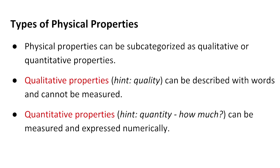Quantitative properties, on the other hand, are something that can actually be measured. We're looking at the quantity of something — physical properties that are measurable, like boiling point and melting point of substances. For example, water freezes at zero degrees Celsius — that is a quantitative physical property of water. Water boils at 100 degrees Celsius — also a quantitative physical property of water.